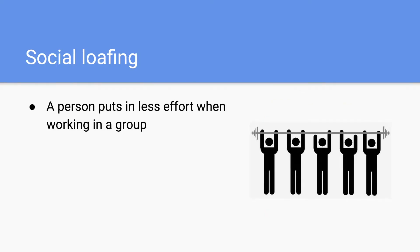Next we have social loafing, and this occurs when a person puts in less effort when working in a group. If you look at the picture on the right, you'll see that three people are lifting up the weights with two arms, and two of them are only using one arm. Because they're in a group, they're putting in less effort — this is social loafing. If you've ever been in a group in school, sometimes you're put in a group with people you don't know, and these individuals might slack off because they feel like someone else will bear the responsibility.